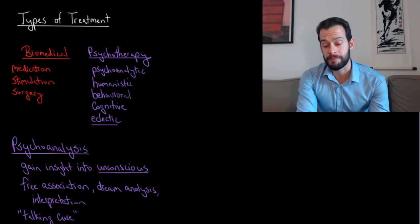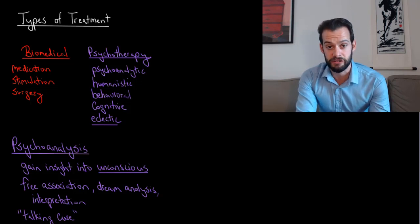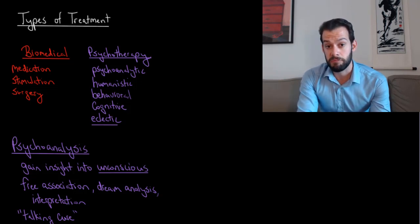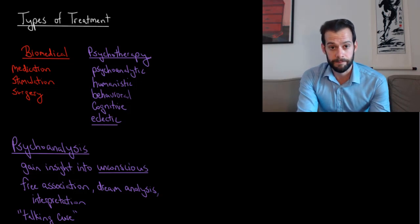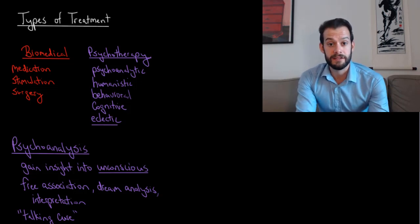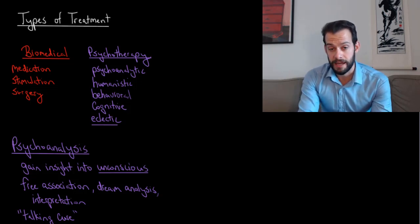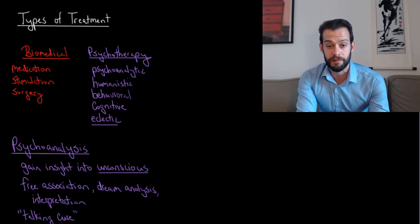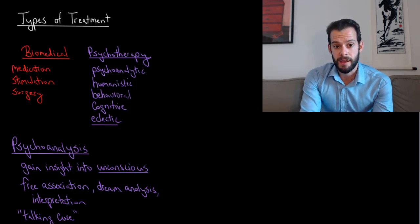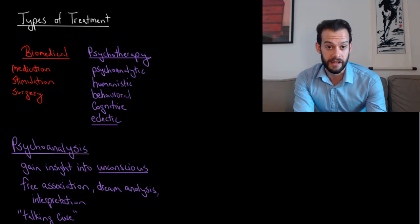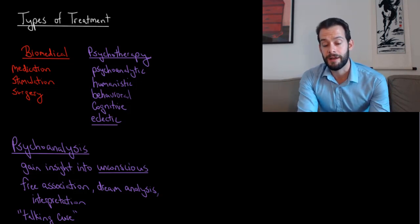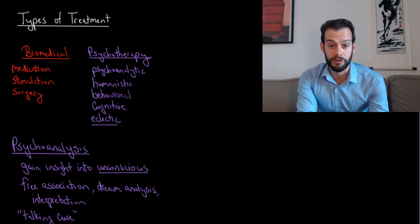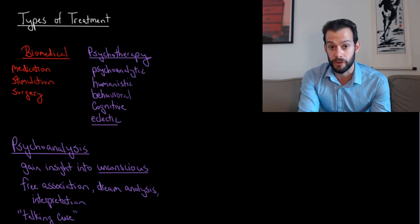Biomedical treatments include things like the use of medication, the use of brain stimulation, or in rare cases the use of surgery. Everything else would be psychotherapy, which includes a range of approaches that can differ substantially from one another. These include a psychoanalytic approach, a humanistic approach, a behavioral approach, and a cognitive approach to treating mental illness.